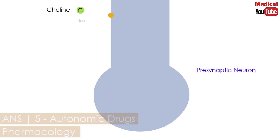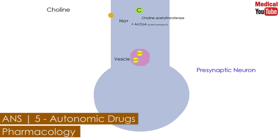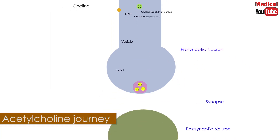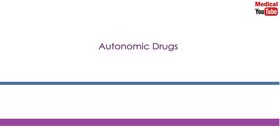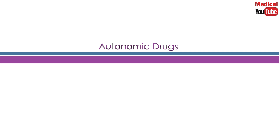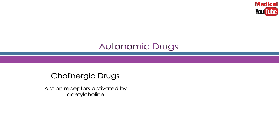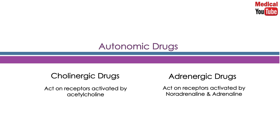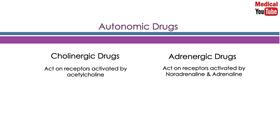In the upcoming three minutes we'll discuss an introduction to autonomic drugs and the journey of acetylcholine from synthesis to degradation. Drugs affecting the autonomic nervous system are divided into two groups according to the type of neuron involved in their mechanism of action: the cholinergic drugs, which act on receptors activated by acetylcholine, and the adrenergic drugs, which act on receptors stimulated by noradrenaline or adrenaline.